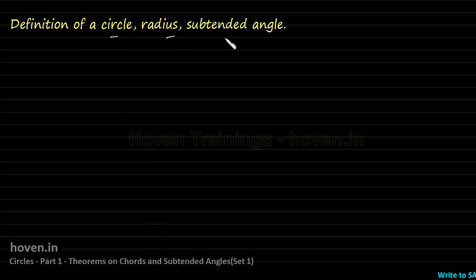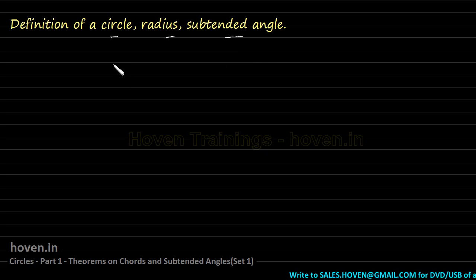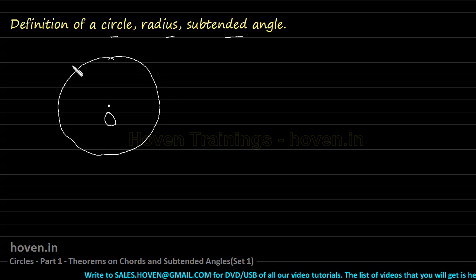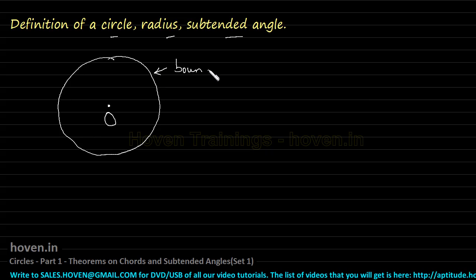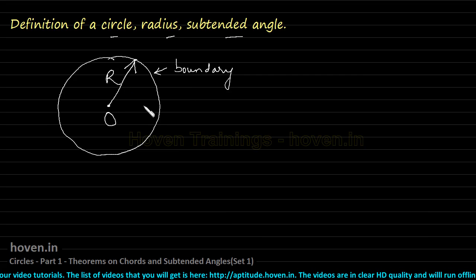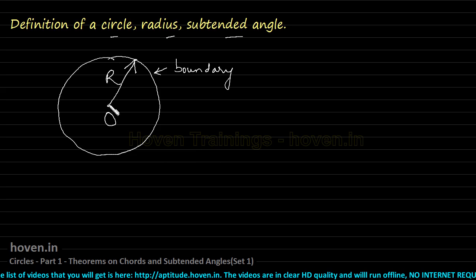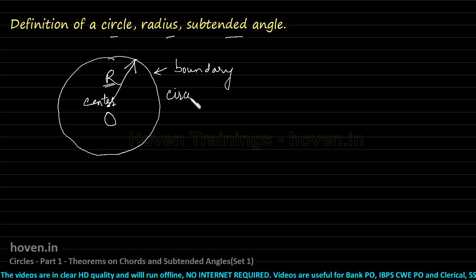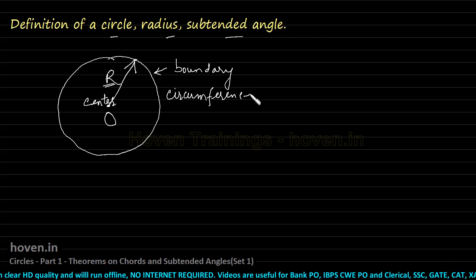Let us take a few definitions of points related to a circle. We know that a circle has a center — we can call it O. The center is equidistant from the boundary or periphery of the circle. The distance between the center and any point on the boundary is called the radius of the circle.